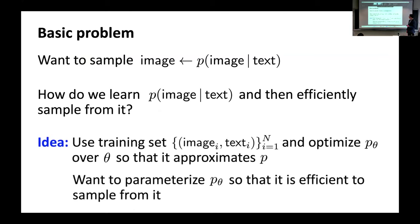The idea is to use some training set where we have pairs — images and text together. I have some image of cats or whatever, and some piece of text that describes the image. What I want to do is to optimize some fiducial probability distribution P_theta over theta so that it approximates the true distribution over images conditioned on text P. We want to parameterize this distribution so that it's efficient to sample from.